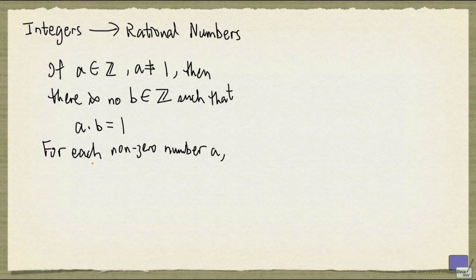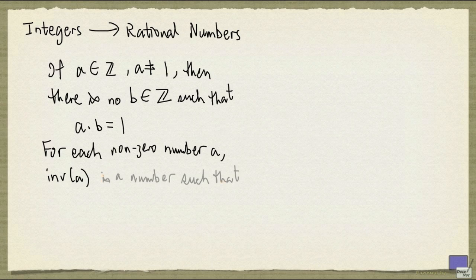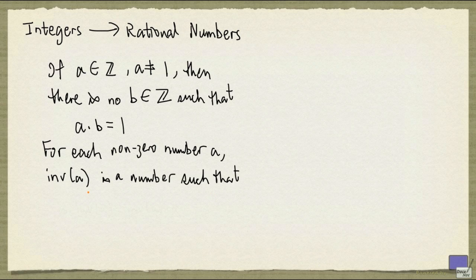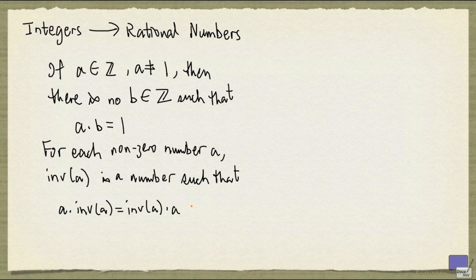For each non-zero number a, inv(a), also called the inverse of a, is a number such that a times inv(a) equals inv(a) times a equals 1.